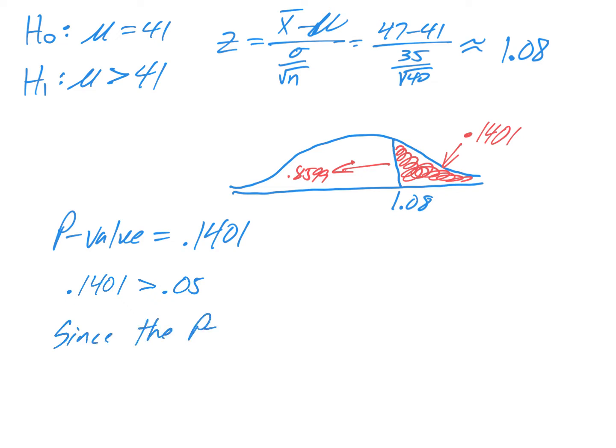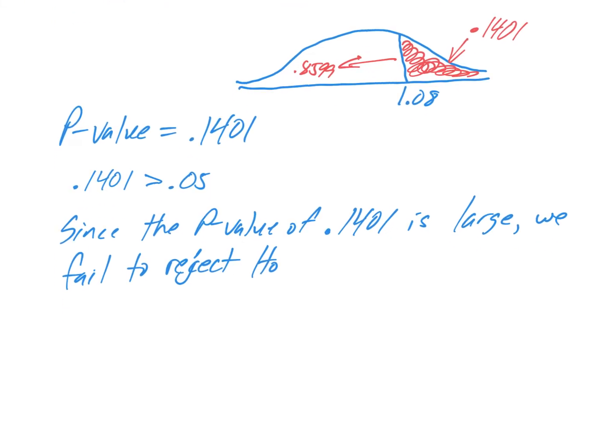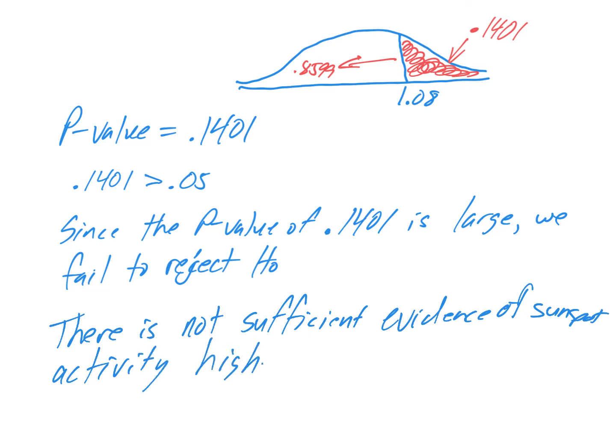And now we can do our sentences. Since the p-value of 0.1401 is large, now you can say, is larger than the significant level, or large is fine. We fail to reject H-naught. Remember, when it's large, you fail to reject. So therefore, there is not sufficient evidence of sunspot activity higher than 41.